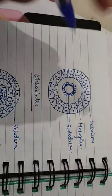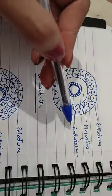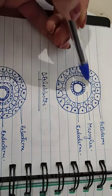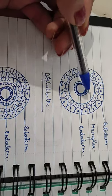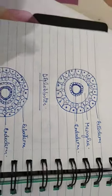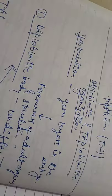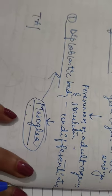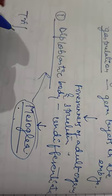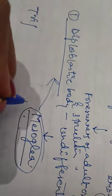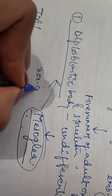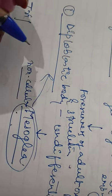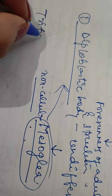In diploblastic organization you can see this structure: this is ectoderm, this is endoderm, and in between ecto- and endoderm there is another third layer which is an undifferentiated mass called mesoglia. It occurs in some porifera. Mesoglia is actually non-cellular, but sometimes it contains a few cells also.